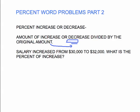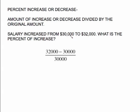So here we have a salary increased from thirty thousand to thirty two thousand. What is the percent of increase? It has to be a percent of increase because it went from thirty thousand up to thirty two thousand. So we're going to subtract these values and put it over the original amount. It is always over the original amount — sometimes it's the bigger number on the bottom, sometimes the smaller, but it is always the original amount.